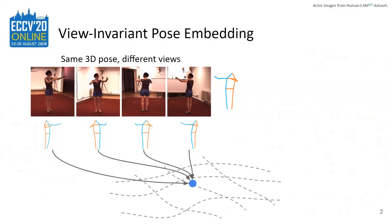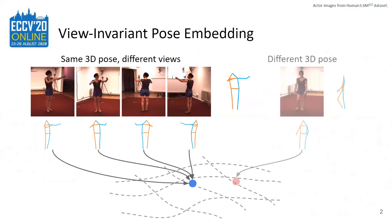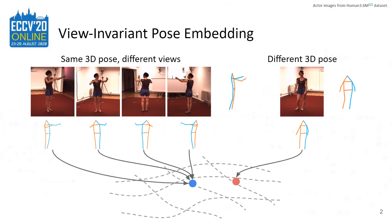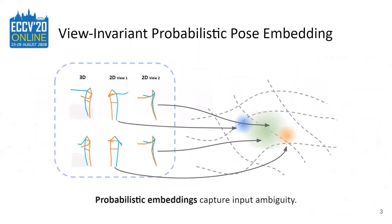We explore our approach to embed 2D pose key points to view-invariant embeddings. 2D pose embeddings from similar 3D poses are close together in the embedding space, and 2D pose embeddings from different 3D poses are further apart. Two different 3D poses can project to the same 2D pose, as seen with view 2 on the right. To capture this input ambiguity in 2D poses, we use probabilistic embeddings.